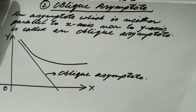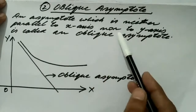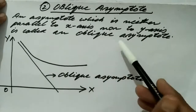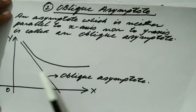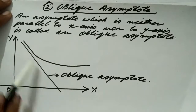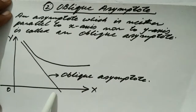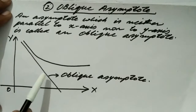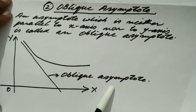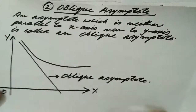The second kind is the oblique asymptote. An asymptote which is neither parallel to the x-axis nor parallel to the y-axis is called an oblique asymptote. For example, if an asymptote to a curve is neither parallel to the x-axis nor the y-axis, we call it an oblique asymptote.